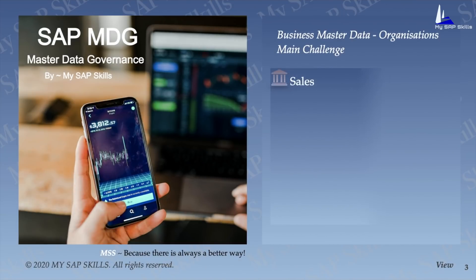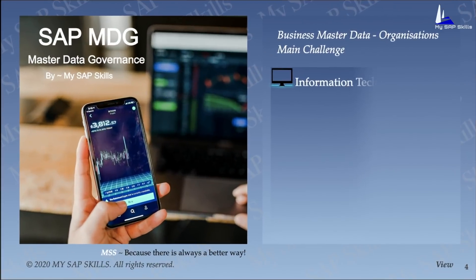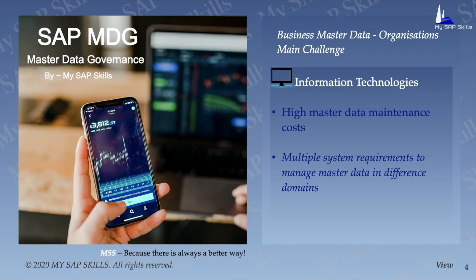In the sales department, senior VP of sales or senior VP of marketing also have a lack of consistent, consolidated view of customer data across all channels. Customer transactions are compromised due to a limited view of the facts, and they usually have to bear high costs due to insufficient supplier selection and rationalization. In the IT sector, the Chief Information Officer or CIO has to deal with high master data maintenance costs and multiple system requirements to manage master data in different domains. Lack of flexibility in dynamic business environments is a big challenge in the field of information technology.